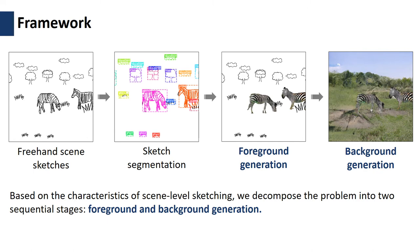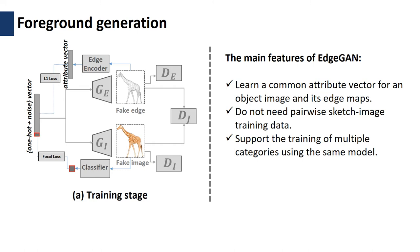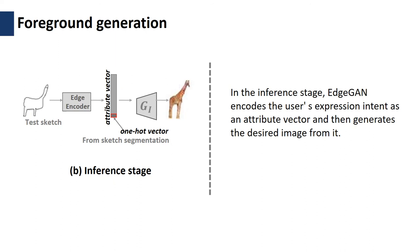For foreground generation, to address the data variance problem caused by the abstractness of sketches, we propose a new neural network architecture called EdgeGAN. This network could generate a high quality image from an object-level sketch. In the training stage, EdgeGAN learns a joint embedding to transform an image and various style edge maps into a shared latent space, where vectors can represent high-level cross-domain attribute information, for example object pose and appearance information. In the inference stage, the model encodes the user's expression intent as an attribute vector and then generates the desired image from it.